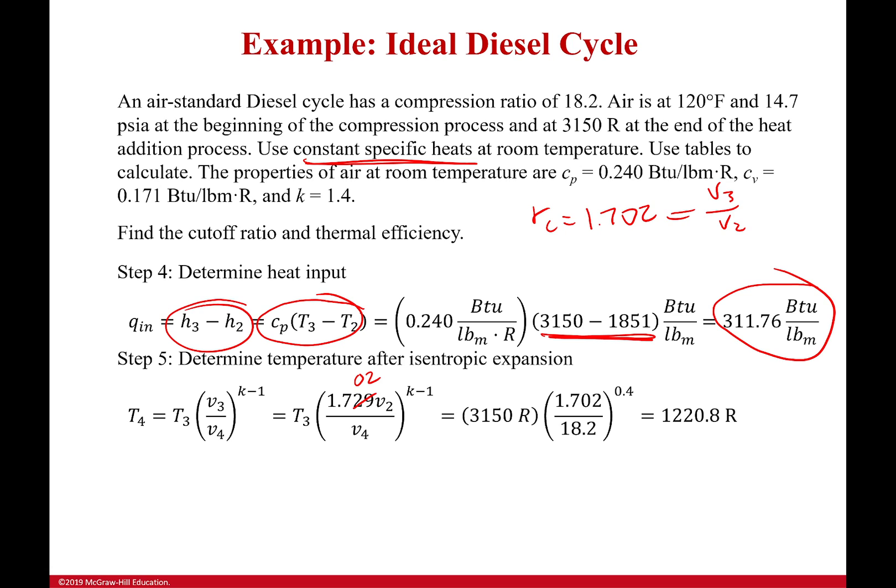V3 over V2. I also know that my compression ratio, which is equal to 18.2, is equal to V1 over V2. So I've got a few ratios here. The last thing is, let's draw our diagram again. We can't see it here. I'm going to draw it for you. This last step from 4 to 1 is constant volume. Volume is equal to constant, which tells me that V1 is equal to V4.